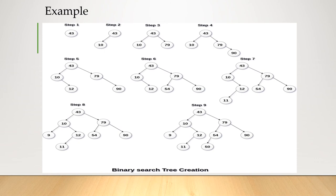So 12 is the right leaf node of 10. Step 6: insert 54 — 54 is greater than 43, so it is placed at the right subtree, but 54 is smaller than 79, so it is the left leaf node of 79. Step 7: insert 11 — as 11 is smaller than 43, it should be placed in the left subtree, so it is the left leaf node of 12.